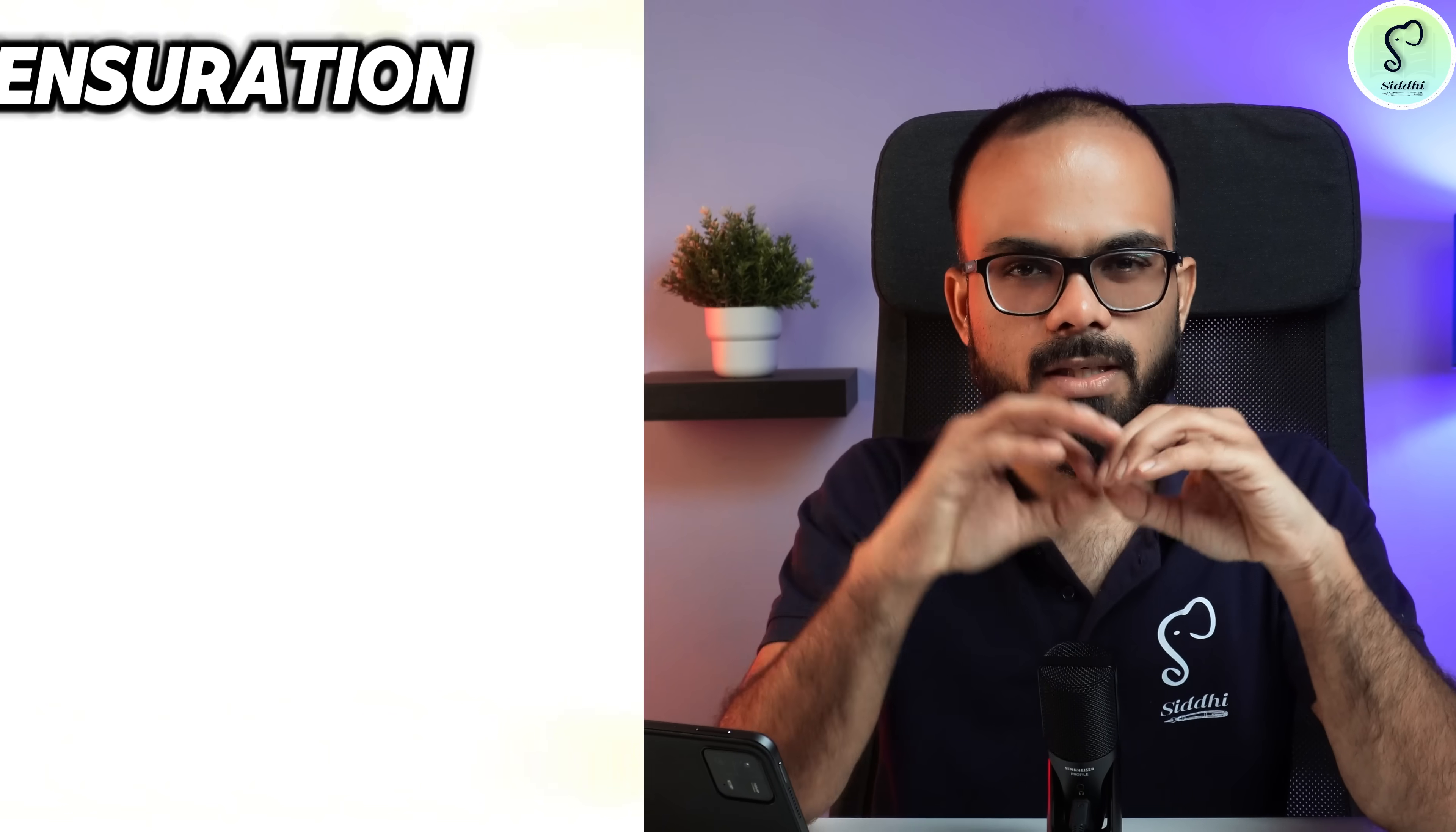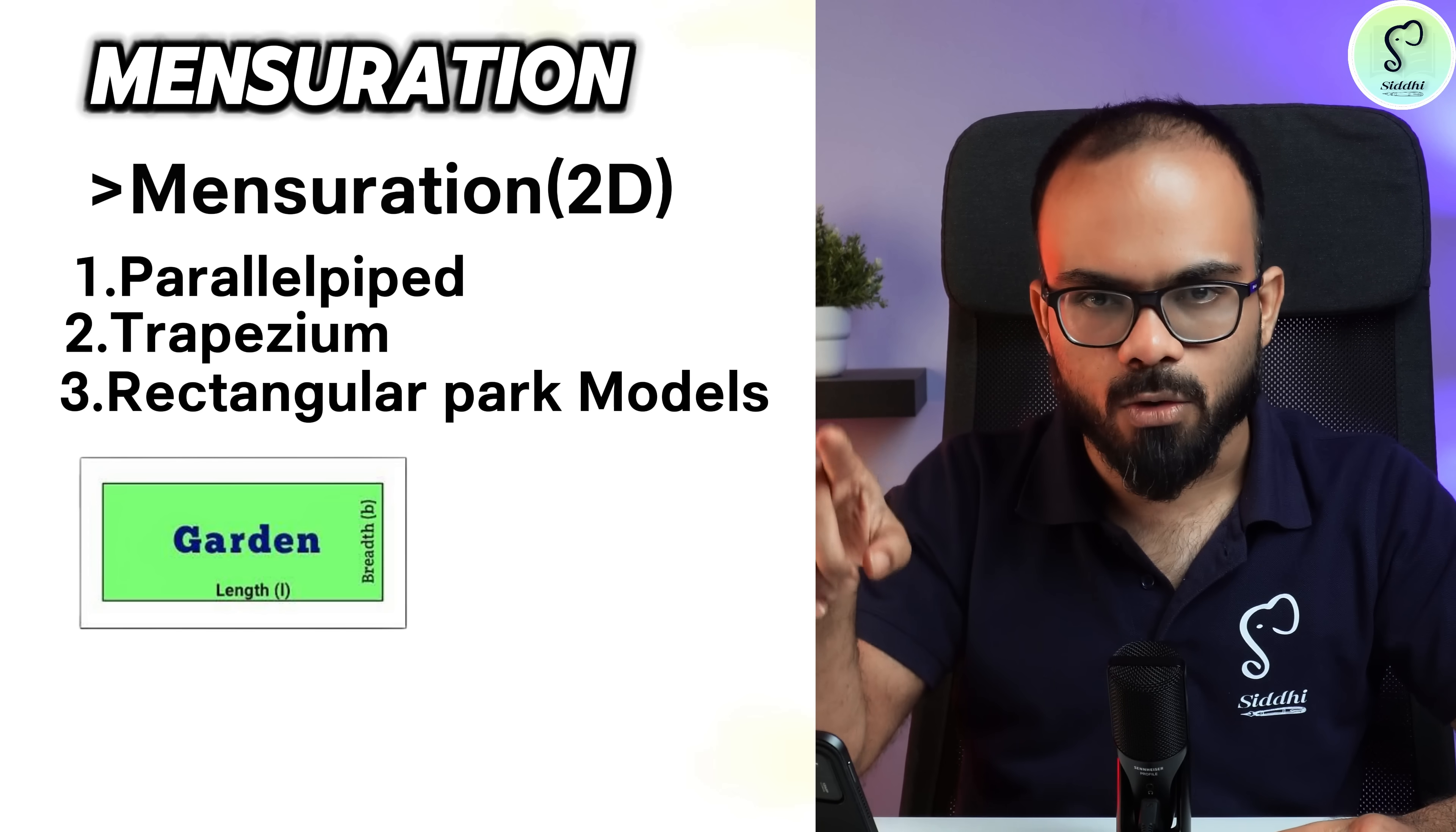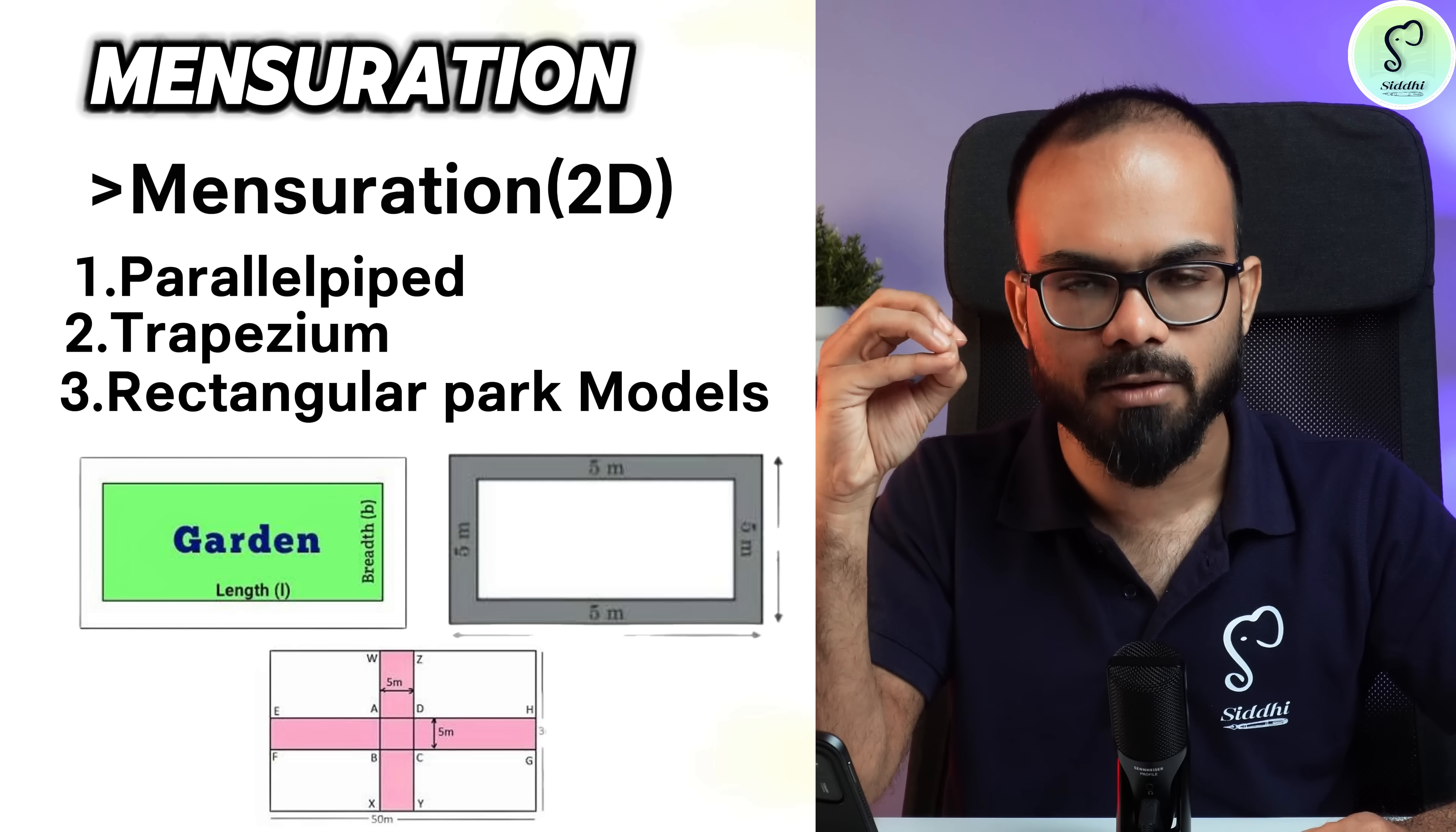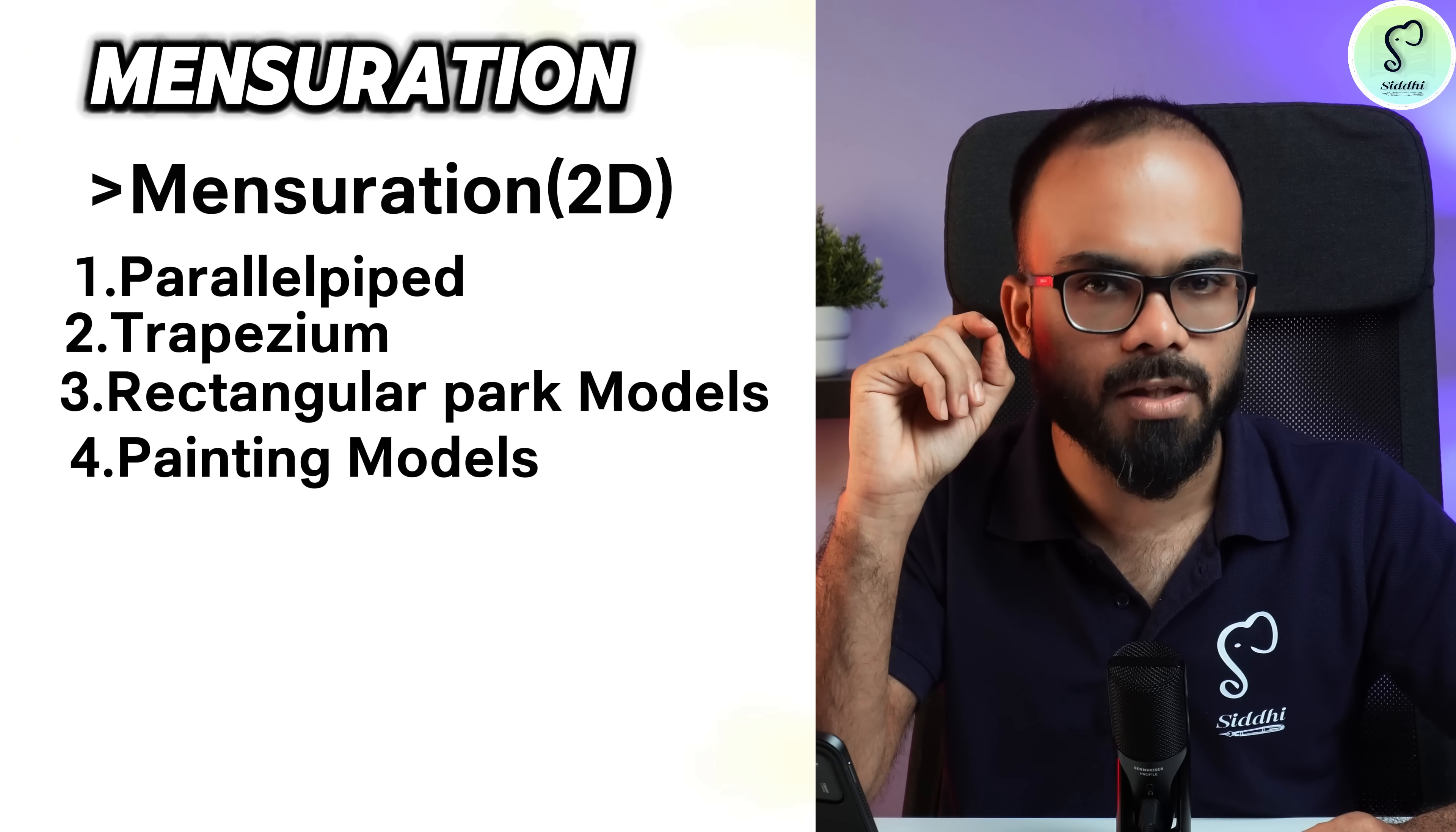Then in 2D, you should have grip on parallelogram areas with respect to trapezium, then a rectangular park with a path laid outside the park, path laid inside the park, and path laid crisscross the park and the cost incurred with respect to laying grass on the entire path. Questions on painting a wall or brick where the cost per square kilometer is given.